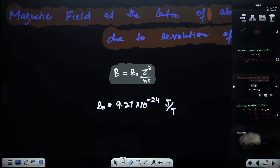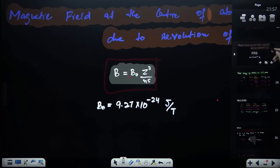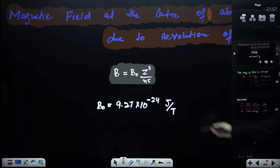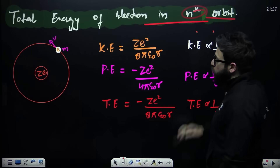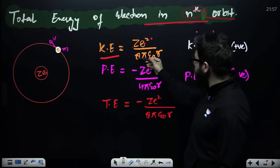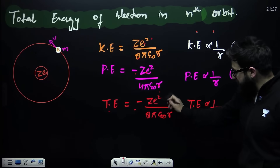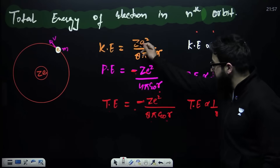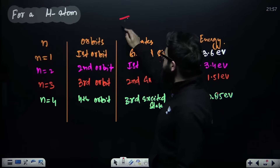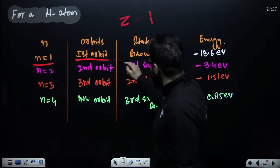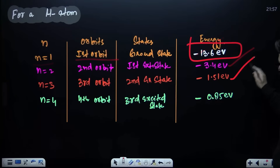The magnetic field created by the electron at its center when revolving in the nth orbit is proportional to z³/n⁵. For energies: kinetic energy = ze²/(8πε₀r); potential energy = −ze²/(4πε₀r); total energy = −ze²/(8πε₀r). For hydrogen (z=1), the energy in the first orbit is −13.6 eV, with subsequent orbits having higher (less negative) energies.